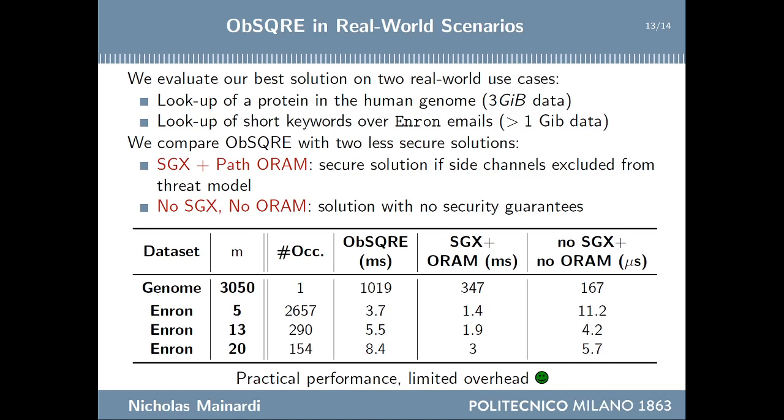Having identified circuit double ORAM as the best solution, we evaluate its practicality on two real-world use cases: lookup of a protein in the human genome, and lookup of short keywords over a real-world email dataset. To assess the security cost of Obscure, we compare it with two less secure solutions — one secure only if SGX side-channel leakage is ignored, and one with no security guarantees. Obscure has a non-negligible overhead compared to the solution with no security guarantees, but only a three times slowdown relative to the solution that does not withstand side-channel attacks. Despite this, Obscure achieves practical performance: protein lookups in just one second and email keyword lookups in just a few milliseconds.